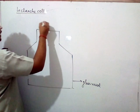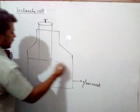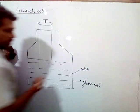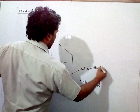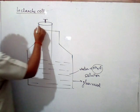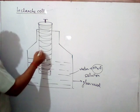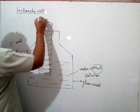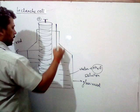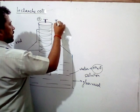In the Leclanche cell, here we have a carbon rod, and here we have a solution of distilled water plus ammonium chloride (NH4Cl). This carbon rod is immersed in this liquid solution. This carbon rod works as the positive terminal. There is also a thin zinc rod, which is also immersed in this solution, and it works as the negative terminal.